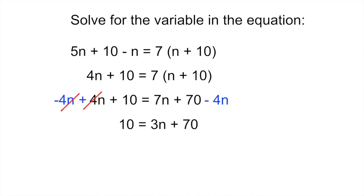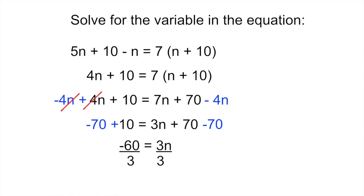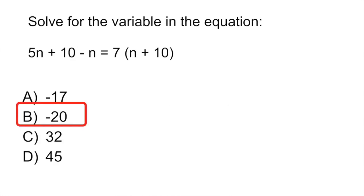Now the equation looks like 10 equals 3n plus 70. Move the 70 to the left side by subtracting 70 from both sides, which cancels on the right. That gives you minus 60 equals 3n. Finally, divide both sides by 3 to isolate n, and you get n equals minus 20, which is option B.